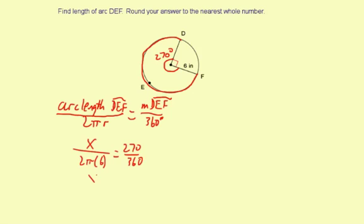We'll simplify x over, and we'll use the commutative property of multiplication, so it'll be 2 times 6 times π, which is 12π, equals 270 divided by 360.